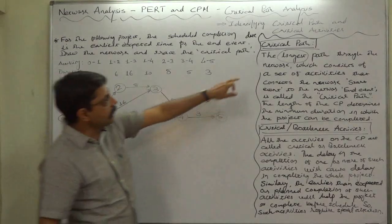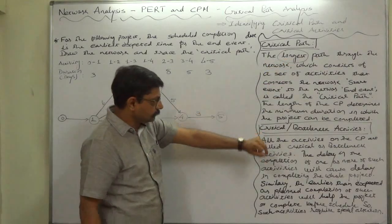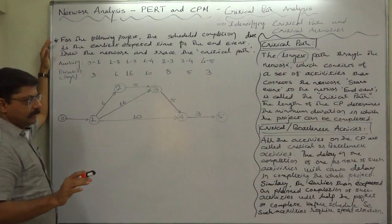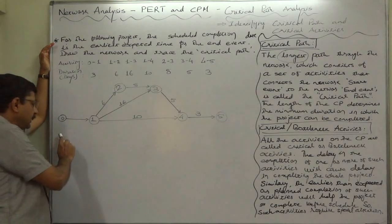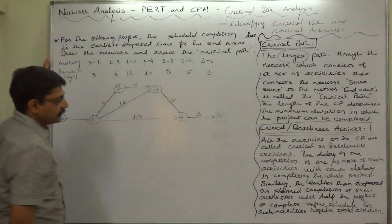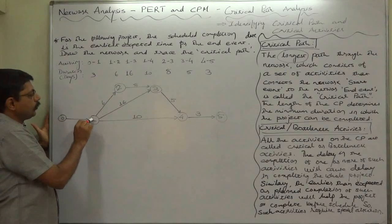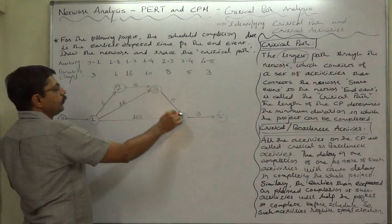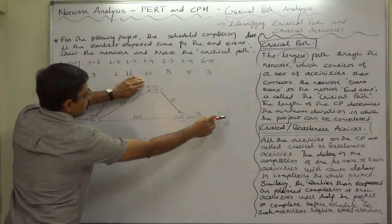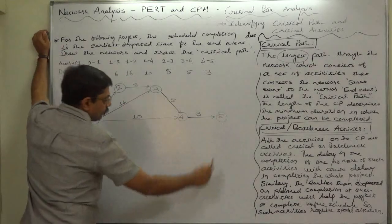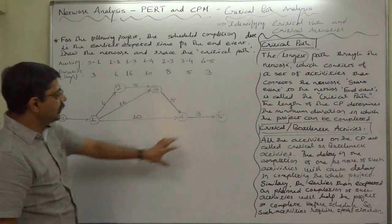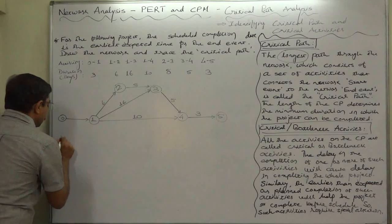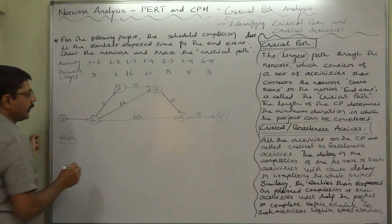Let's first think about which path is the longest, meaning the one having the longest duration. Let's check how many paths are possible from the start to the end of the project. The first path is 0 → 1 → 2 → 3 → 4 → 5. Another possible path is 0 → 1 → 3 → 4 → 5. The third path is 0 → 1 → 4 → 5. So in three different ways we can reach the end event from the start event, and all these paths have different durations.